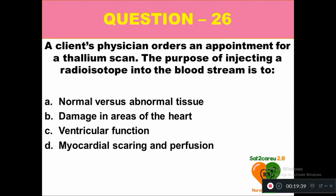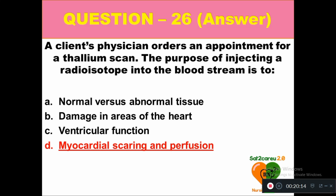Question 26: A client's physician orders a thallium scan. The purpose of injecting a radioisotope into the bloodstream is to: option A differentiate normal versus abnormal tissue, option B identify damage in areas of the heart, option C assess ventricular function, option D detect myocardial scarring and perfusion. The right answer is option D — the purpose of injecting radioisotope is to detect myocardial scarring and perfusion.